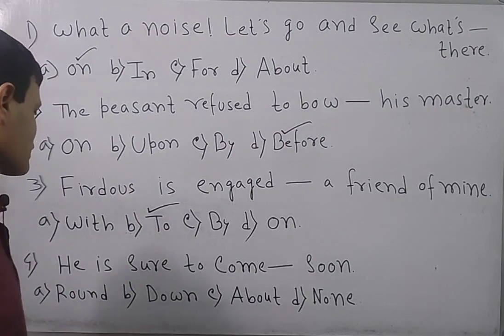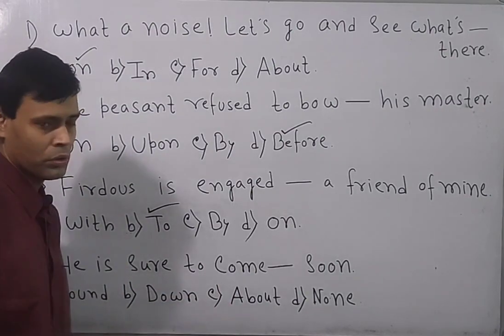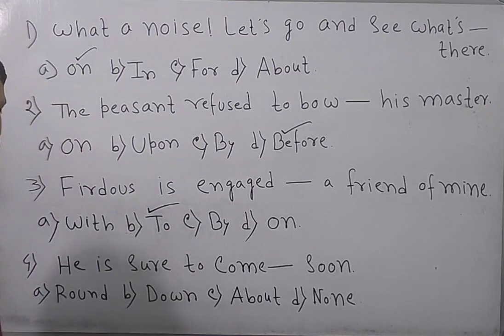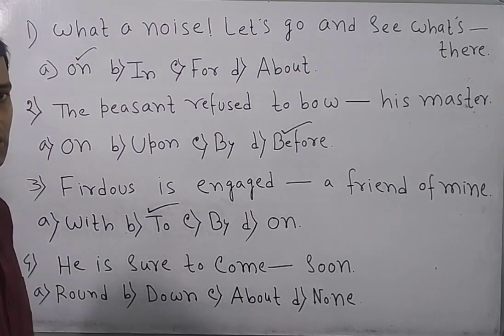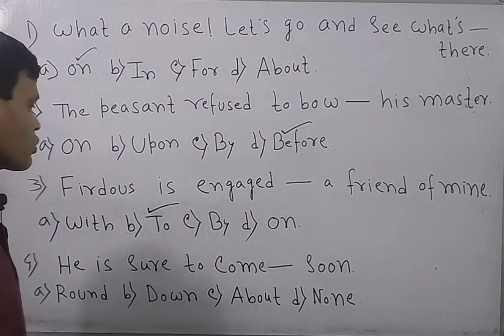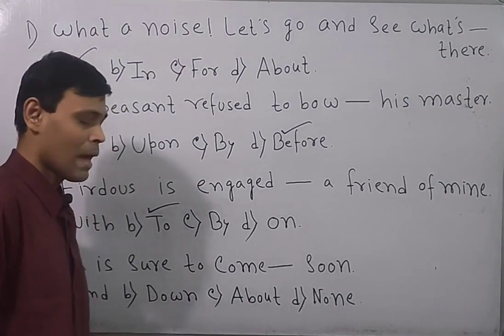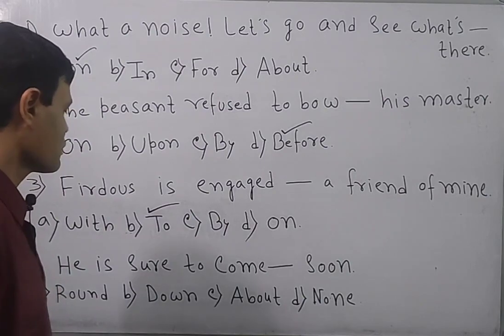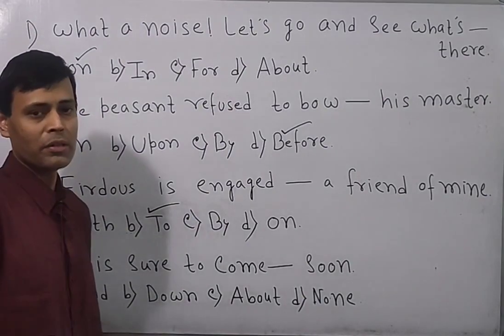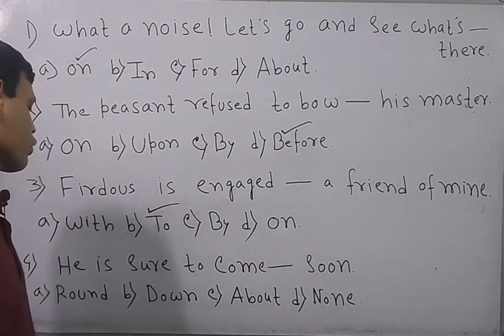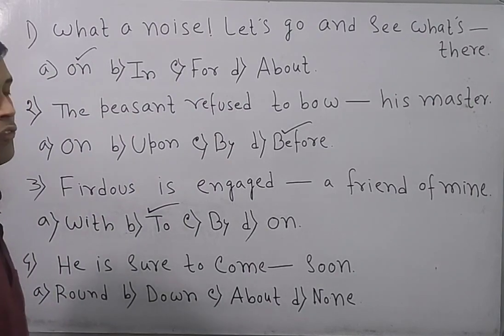Now, go next. He is sure to come soon. Come round means get recovery. Come down, you all know the meaning. About means happen suddenly. None. That means he is sure that he will recover soon. So, out of the four options, come round will be the perfect answer.